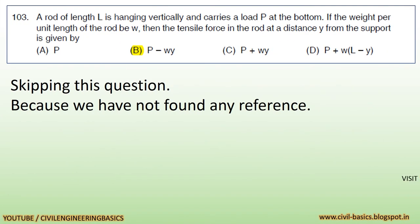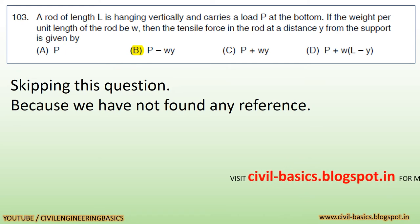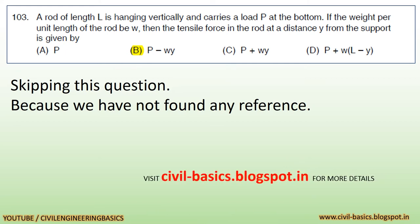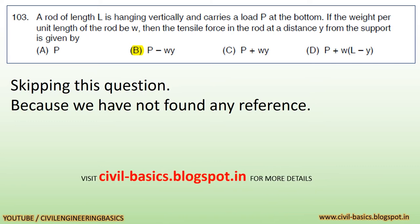Question: A rod of length L is hanging vertically and carries a load P at the bottom. If the weight per unit length of the rod is W, then the tensile force in the rod at a distance Y from the support is given by: a) P, b) P+W, c) P+W, d) P+WL-Y. We are skipping this question because we have not found any reference. Visit civilbasics.blogspot.in for more details.